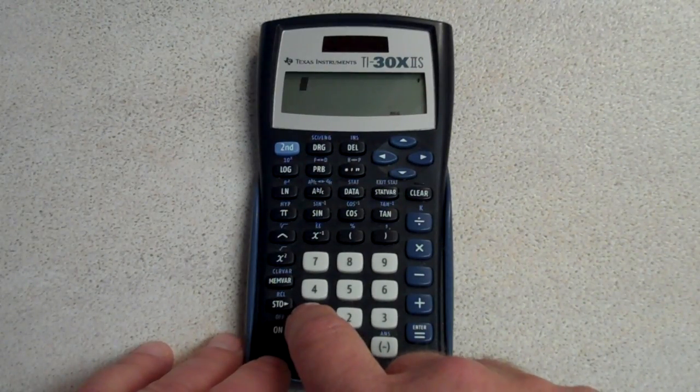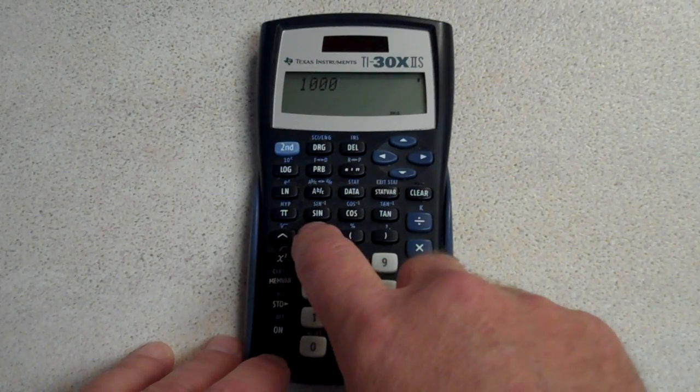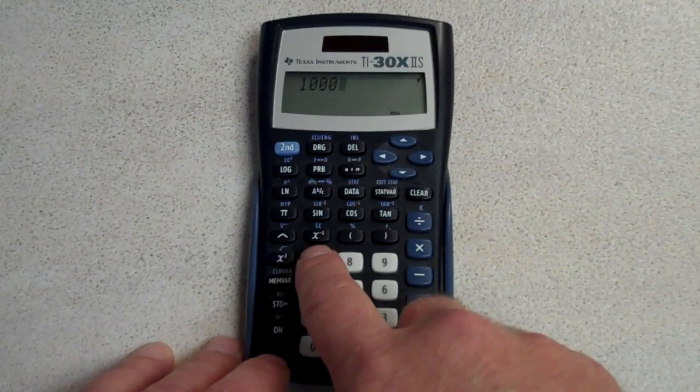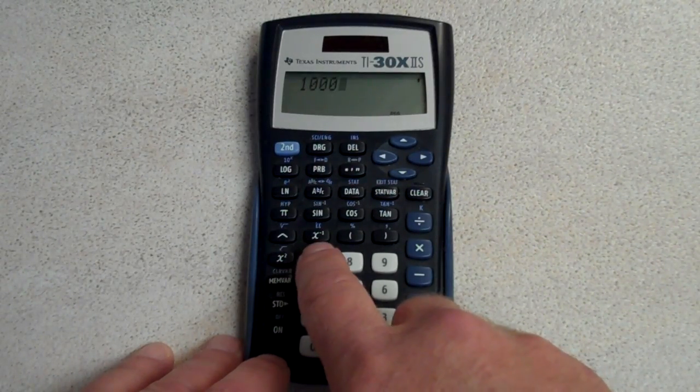So for the 1,000 we're going to enter 1,000 just like you thought. Then we're going to push the reciprocal key which is right here above your 7 key on your TI-30X.